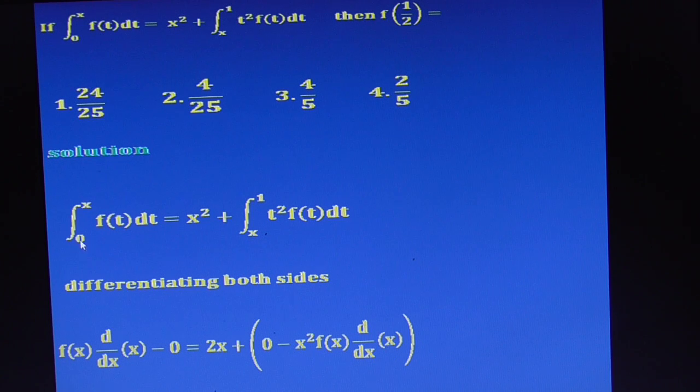Lower boundary is 0, differentiation of 0 is 0, equals x squared. Differentiation is 2x plus, so differentiation of definite integral again, first substitute upper boundary in place of t and differentiation of upper boundary. Your upper boundary is 1, a constant. Differentiation of constant is 0, therefore the first term is 0.